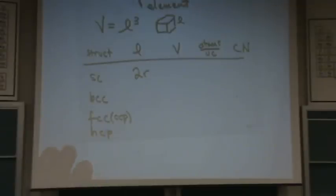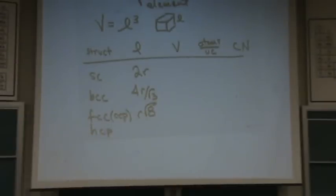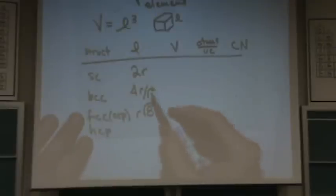For face centered cubic, it's, oh, I'm skipping one. I guess I'll do body centered cubic first. For body centered cubic, it's 4r over root 3. And for face centered cubic, it's r root 8. HCP we don't do. Unless Lam was really crazy this quarter, you're probably not going to do that. So the volume, you just cube the previous column. Find the volume. So that's just 8r cubed.